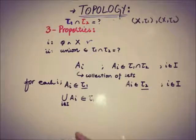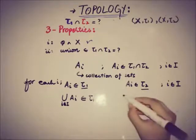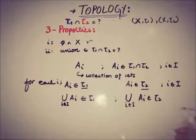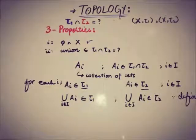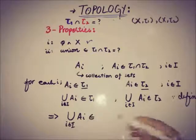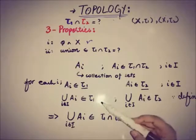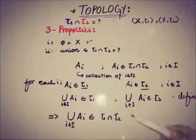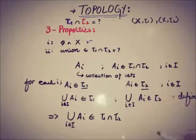And the same thing can be done for τ2, by the definition of topology. So the union of Aᵢ over all indices also belongs to τ1, and it belongs to τ2. This implies that the union of Aᵢ is also a member of τ1 ∩ τ2, because if individually the union belongs to τ1 and to τ2, then it must also belong to their intersection. Therefore the second condition is satisfied.